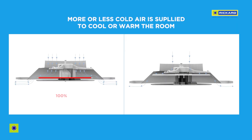In cooling mode, when more cooling is required, the diffuser will open to 100% to meet the demand. As the demand is reduced, the diffuser will close down to 30%. A PRR loop ensures accurate control, and adjustable limits allow fine-tuning as required.